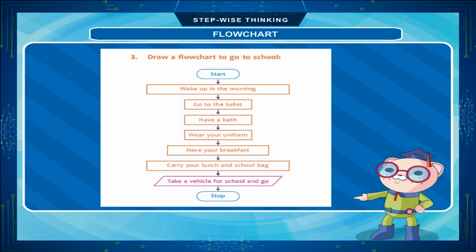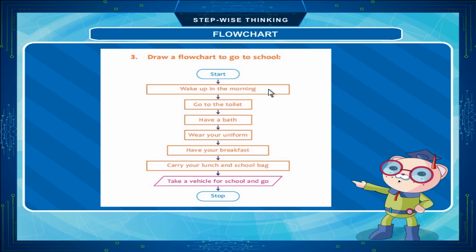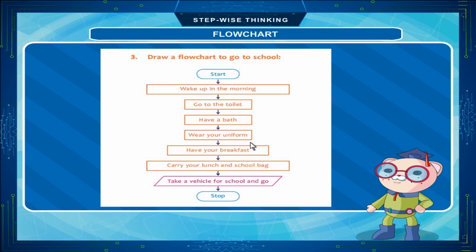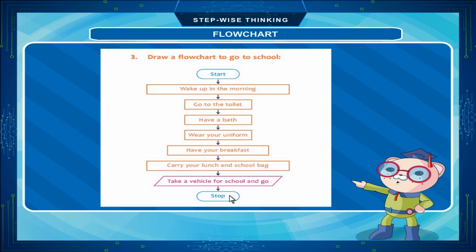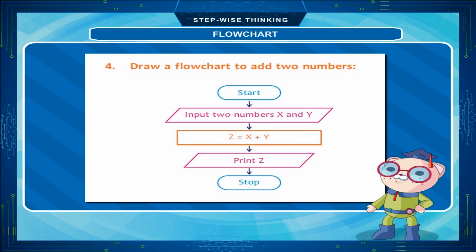Example 3: Draw a flowchart to go to school. Start → Wake up in the morning → Go to the toilet → Have a bath → Wear your uniform → Have your breakfast → Carry your lunch and school bag → Take a vehicle for school and go → Stop.